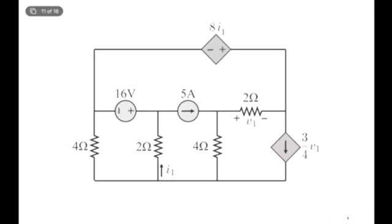Hello everybody. In the previous video we analyzed the circuit using node voltage analysis. Now our goal is analyzing the same circuit using mesh current analysis. One of the most important differences between these two analyses is that in mesh current analysis we don't need to label the node voltage or ground voltage — it can be here or anywhere else. It doesn't matter from the mesh current point of view.